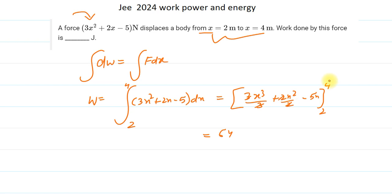When we put 4, it's 64. 4 cubed is 64 plus 16 minus 5 into 4, which is 20. That is after putting the upper limit. For the lower limit, we put 2, so it is 8 plus 4 minus 5 into 2, which is 10.